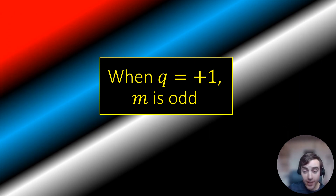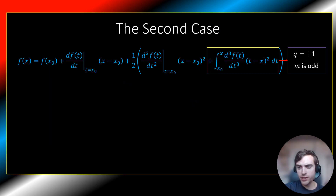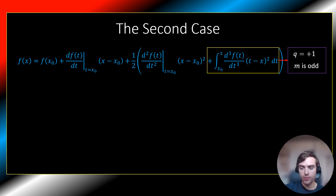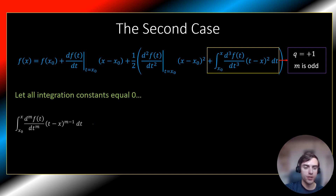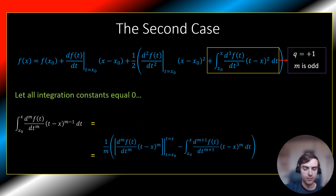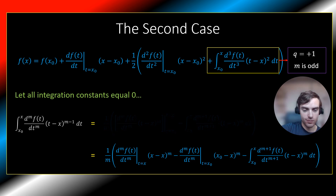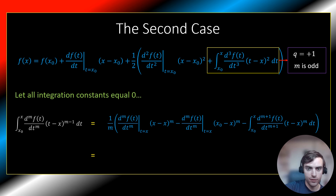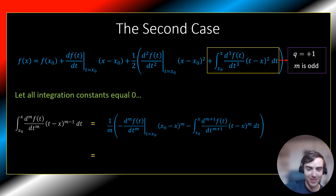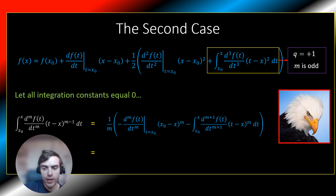Now let us move on to examining the second case. We consider the case where we must expand an integral using integration by parts with a Q value of positive one and an M value of an odd integer. We can be at any point in our Taylor series such that the expandable integral is of this form, occurring every two expansions. We expand this integral, setting all future integration constants equal to zero.